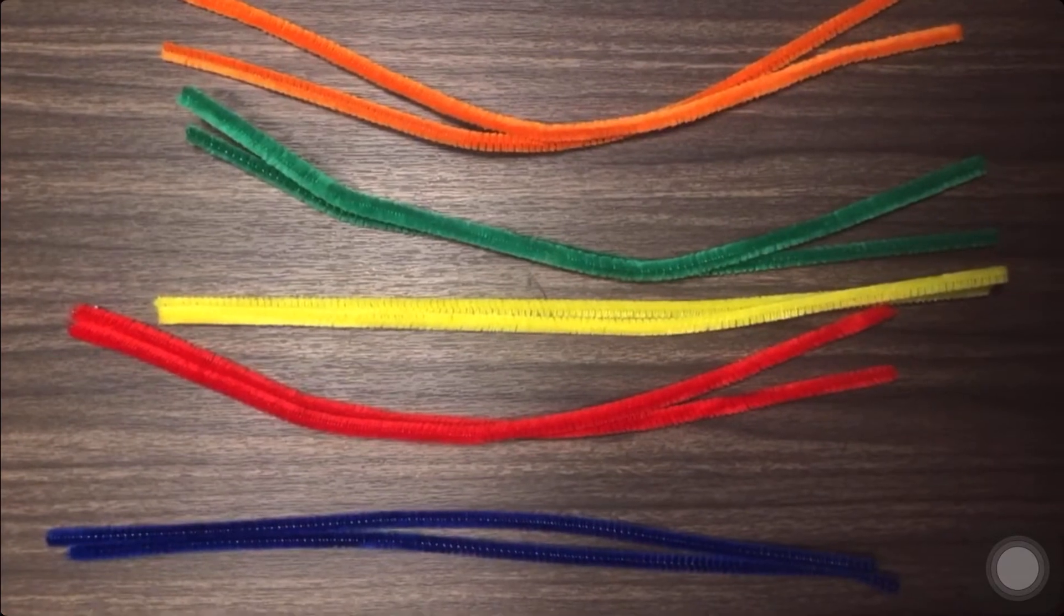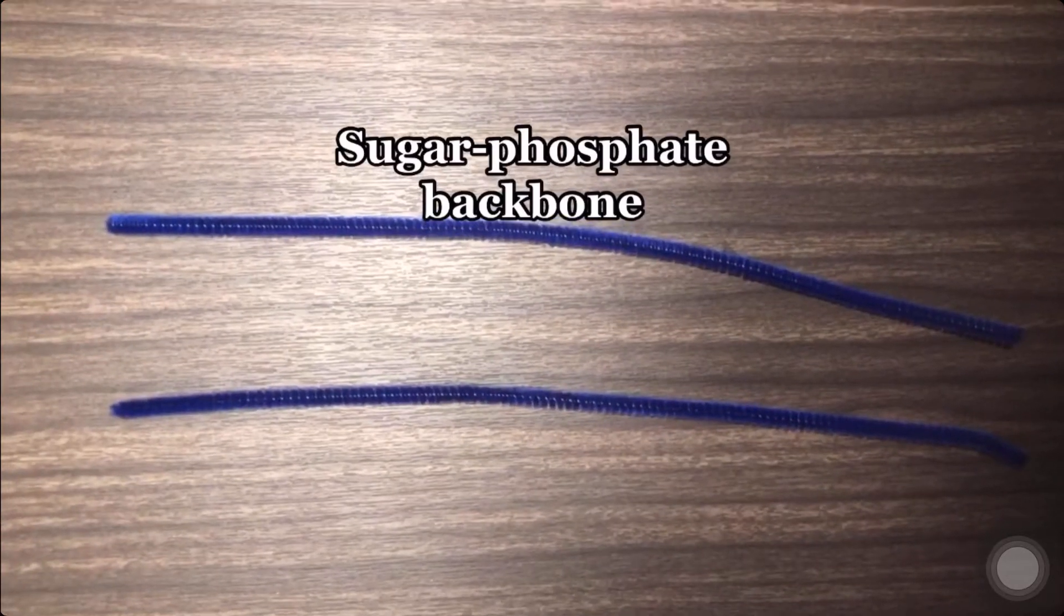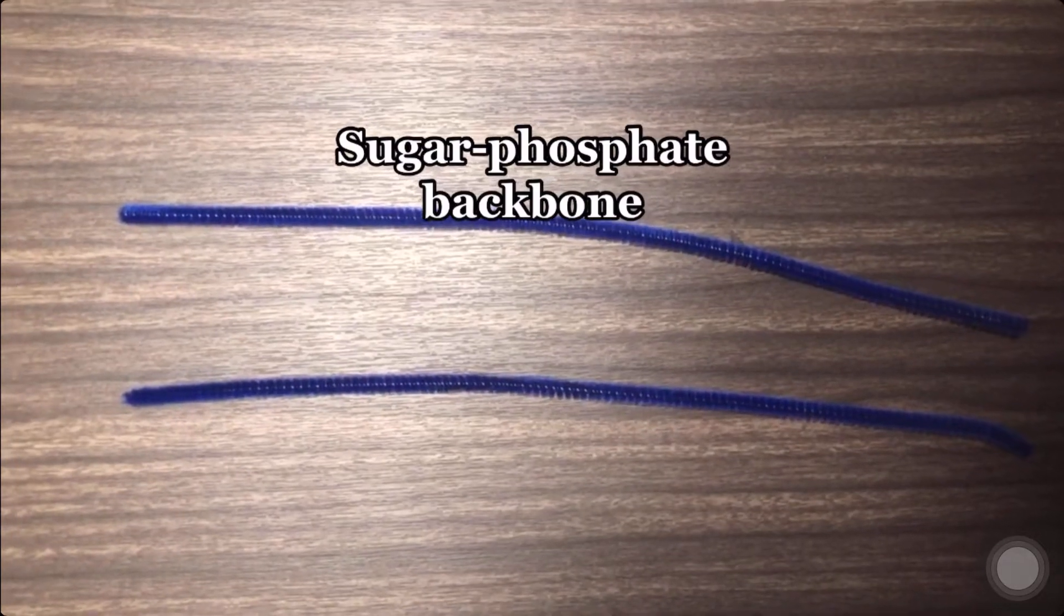Start off by taking five different colors of pipe cleaners and setting four of them aside. These two full-length pipe cleaners will represent the sugar phosphate backbone.